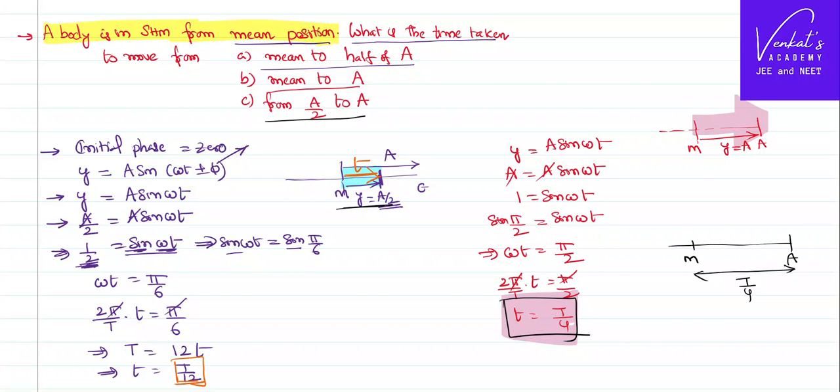From mean position to half the amplitude, that is up to here, we found that it takes a time of T by 12. Now he wants us to find out from a by 2 to a, from here to here. How much time it takes? This total time minus this first time.